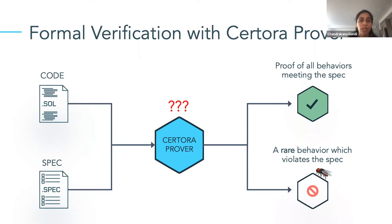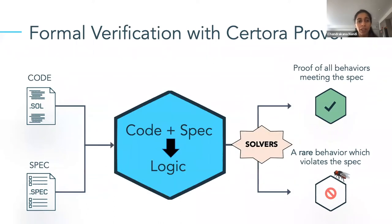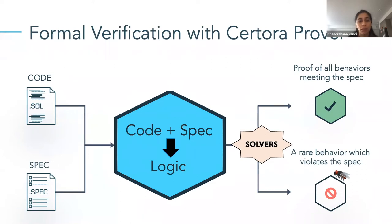In today's talk, we want to take a slightly closer look and see exactly how the Certora Prover accomplishes this task. What is really happening is that it takes the code and the spec and converts it into a logical formula — something like P implies Q, or P or Q. Once we convert the code and spec into a logical formula, we can use solvers, which are specialized tools that check the validity of this logical formula. That's how the Certora Prover works.